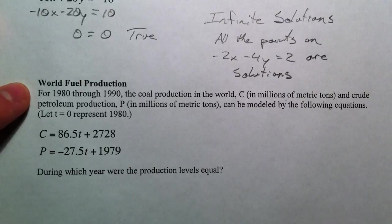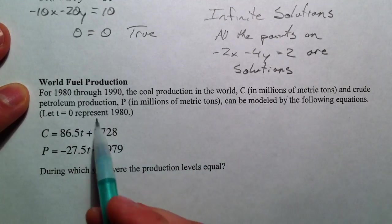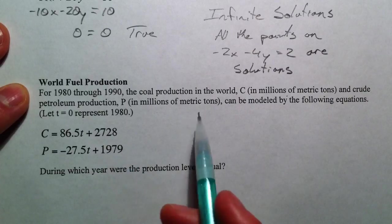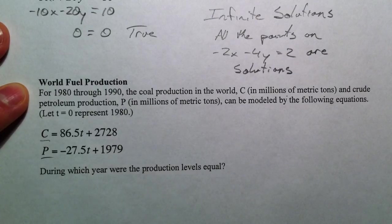All right. For 1980 through 1990 coal production, and crude petroleum production, can be modeled by the following equation. So, we've got coal and petroleum. During which year were the production levels equal?